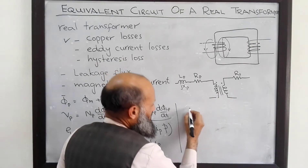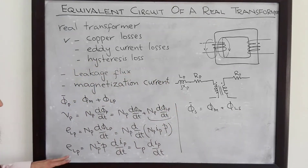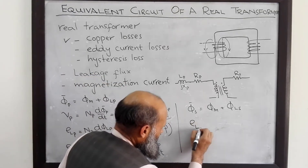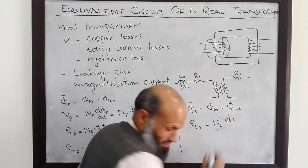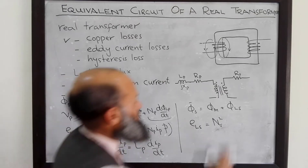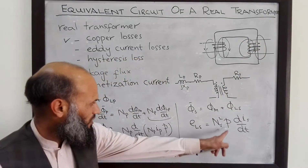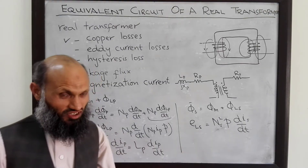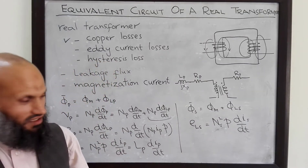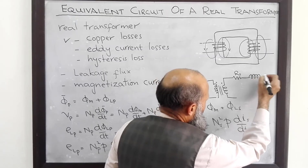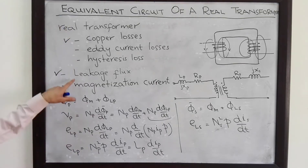On the secondary side, the voltage due to leakage flux equals Ns²·P·(dIs/dt), where P is the permeance of the path followed by the secondary leakage flux lines, which may differ from the primary side permeance. Therefore, the effect of secondary leakage flux can also be incorporated in the equivalent electrical circuit by appending an inductor in series on the secondary side. We have now incorporated the effects of copper losses and leakage flux.